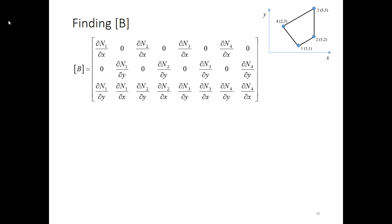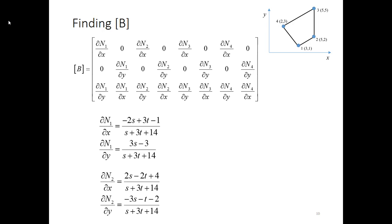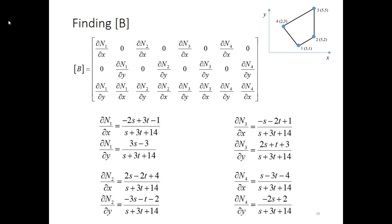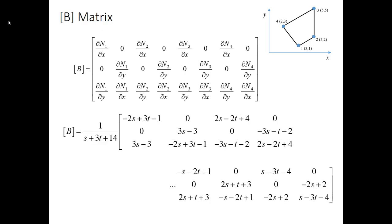This process repeats for shape functions 2, 3, and 4. The B matrix has the first two columns from shape function 1 derivatives; the rest depend on the other shape functions. Shape function 2 derivatives look like this, shape function 3 like that, and shape function 4 like those. All are divided by the same factor from the determinant of the Jacobian — that term appears in all B matrix entries. Plugging each of those terms into the B matrix gives us the final result: B = 1/(S + 3T + 14) times the matrix, with 3 rows and 8 columns.